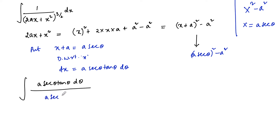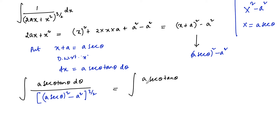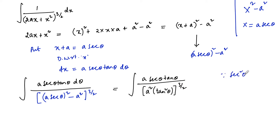So we write (a·sec(θ))² − a² to the power 3/2 in the denominator. The integral becomes: a·sec(θ)·a·sec(θ)·tan(θ) divided by a²·(sec²(θ) − 1)^(3/2), since sec²(θ) − 1 = tan²(θ) by trigonometric identity.